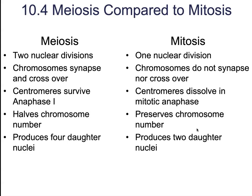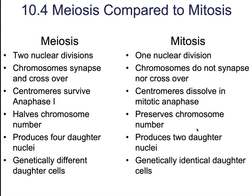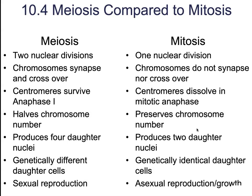Meiosis is going to produce four daughter nuclei, whereas mitosis only produces two daughter nuclei. In meiosis, the daughter cells are going to be genetically different, as opposed to mitosis, where the daughter cells are going to be genetically identical.